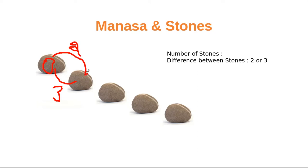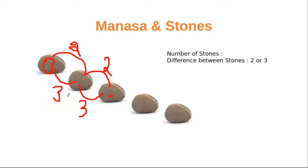Again, from the second stone to the third stone the difference can be two or three. So the possible values at the third stone are: two plus two equals four, two plus three equals five, three plus two also equals five, or three plus three equals six — giving us four possible values.